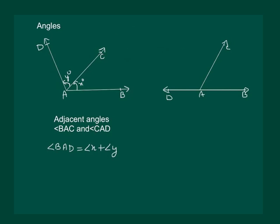If the non-common arms AB and AD form a line, then the angles BAC and CAD form a linear pair. In other words, angle X and Y will be called linear pair of angles.